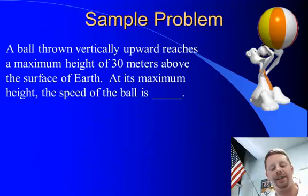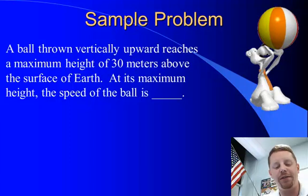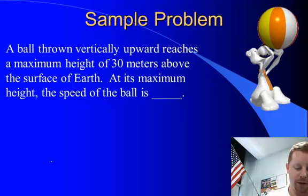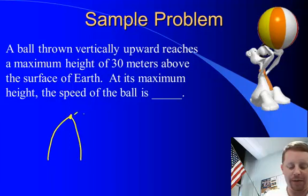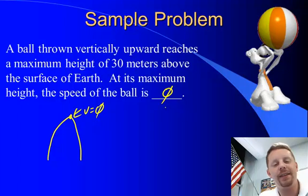Let's take a look at an example. A ball thrown vertically upward reaches a maximum height of 30 meters. At its maximum height, what's the speed of the ball? The object travels up, at its highest point it stops, then comes back down. V equals zero at its highest point — so the speed at maximum height is zero. That simple.